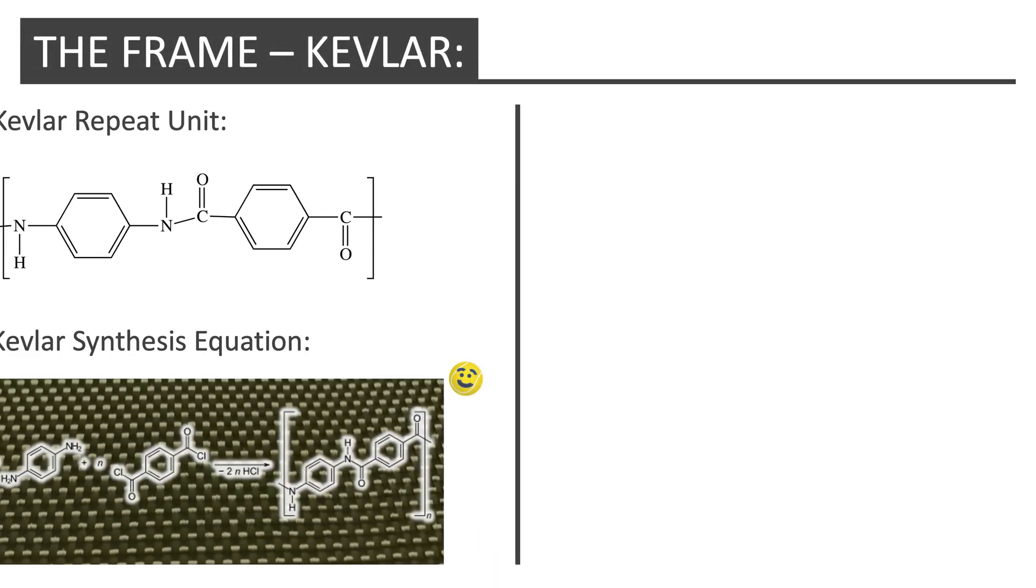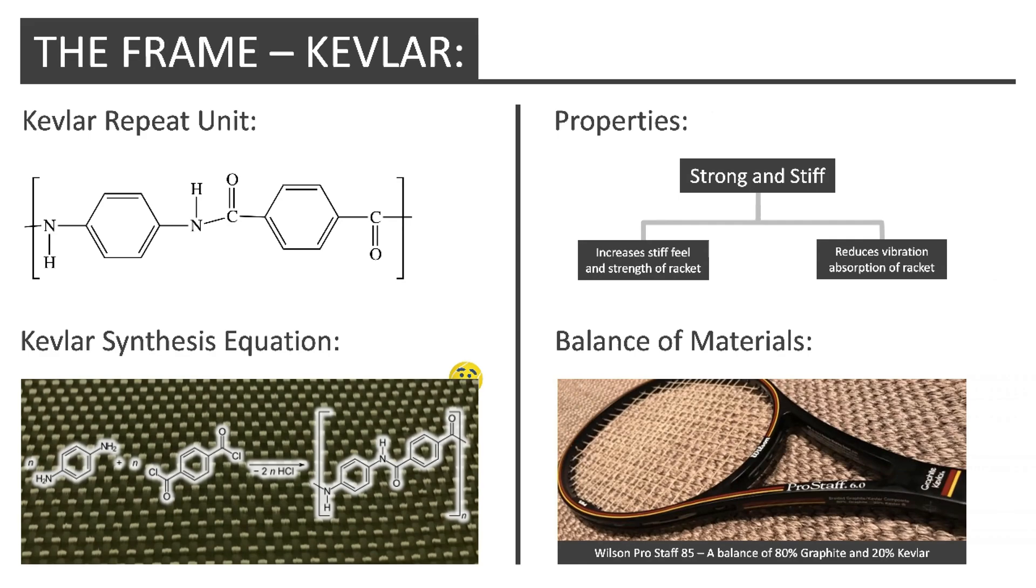Kevlar, a synthetic polymer and an example of a polyamide, known for its strength and stiffness, is also found in racket frames. This provides greater feel in the racket, however, the trade-off is that it reduces vibration absorption, and it is stiffer than materials like graphite. This means a balance of materials in the frame needs to be found to give a desired feel.